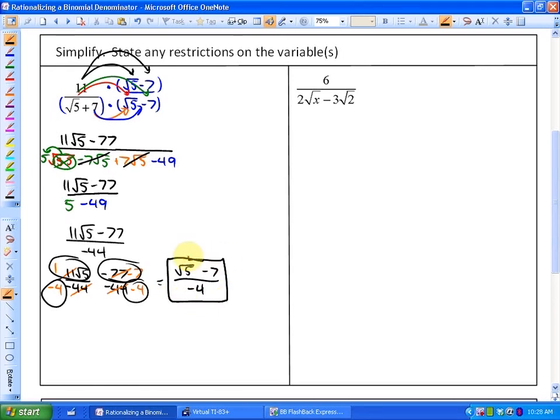In this next one, you may anticipate what the conjugate is going to be. Just before we do that, let's talk about any restrictions. Since I have a square root of x, one of my restrictions in this particular case would be that x has to be greater than or equal to 0.